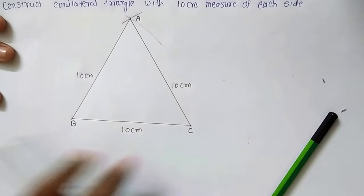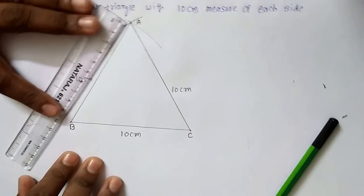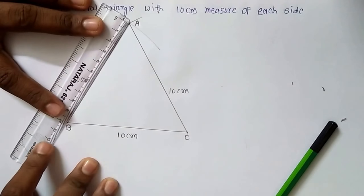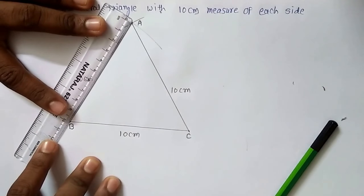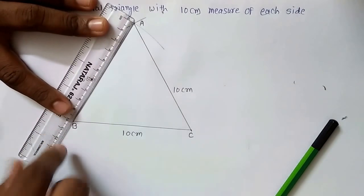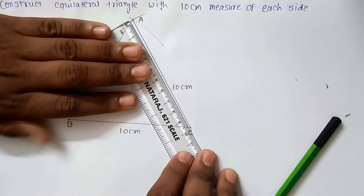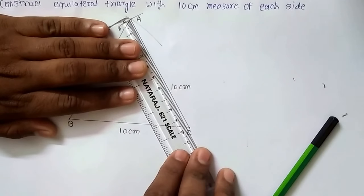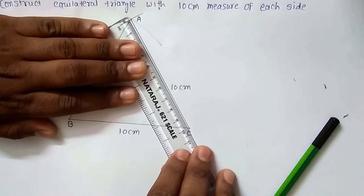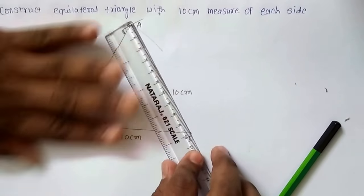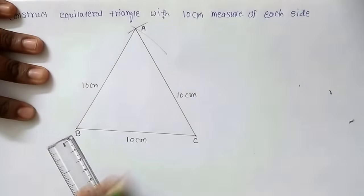Whether it is 10 cm or not. We have taken this one as 10 cm only. So I will check here only. That you can see from 0 to 10. This is 10 cm. Similar way here also I will check it. Let me see. This is A and this is C. You can see that AC is also of measure 10 cm.